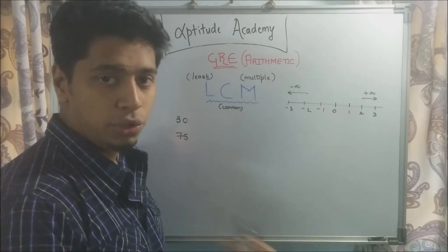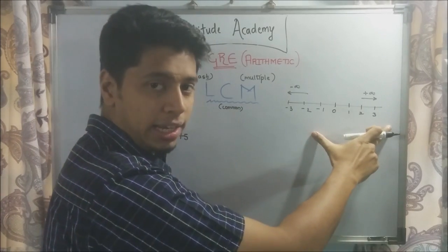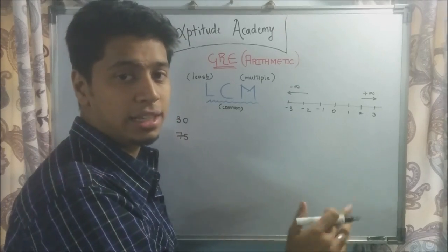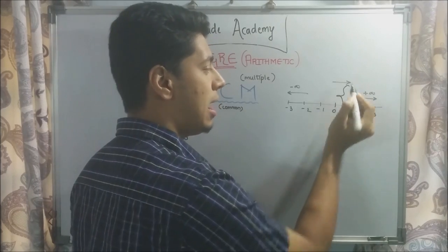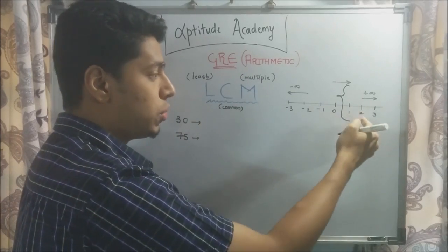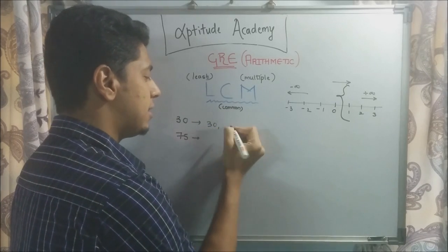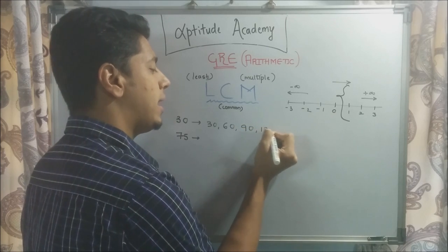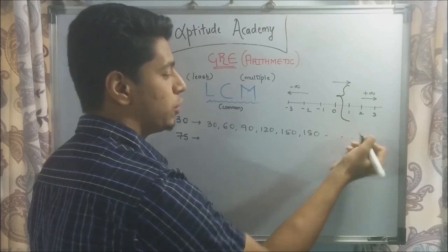By definition for multiple, you know that when you take 30 and multiply by all the numbers on the integer line, they will all be multiples. But in LCM, you will only consider the positive multiples. So we consider from here after zero on the RHS. You multiply 30 by 1, 2, 3, 4 and so on to positive infinity. I'm going to write the multiples: 30, 60, 90, 120, 150, 180 and so on and so forth.